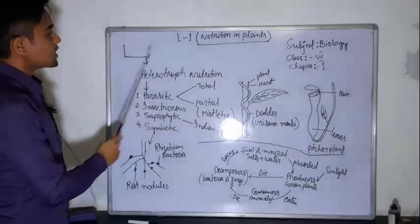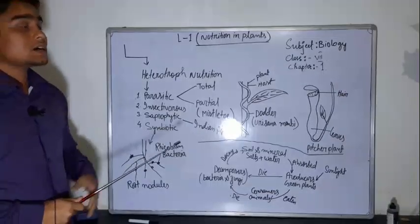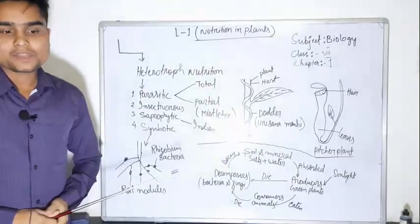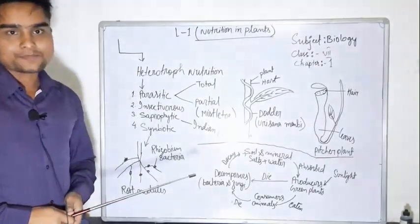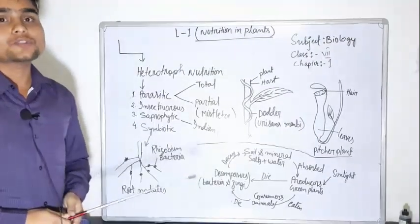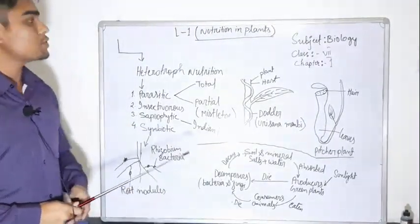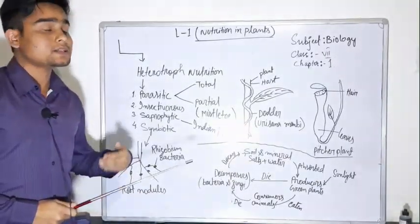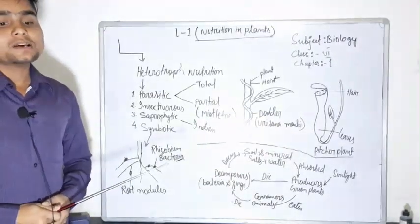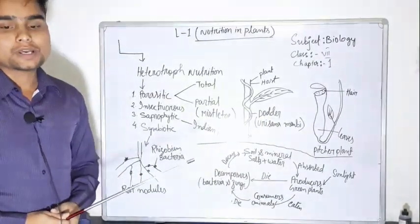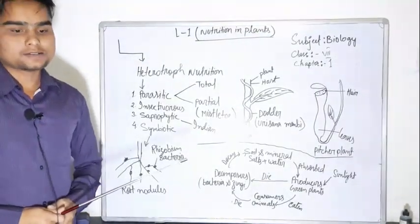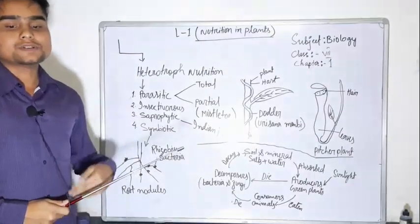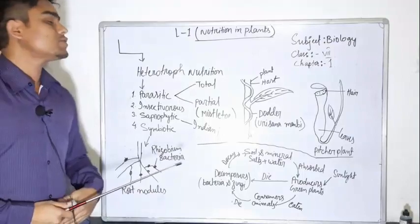In heterotrophic modal nutrition, there are a lot of organisms that are dependent on other organisms. There are plants which cannot produce their own food, and so these are dependent on green plants or other organisms for their food. Such modal nutrition is called heterotrophic modal nutrition.